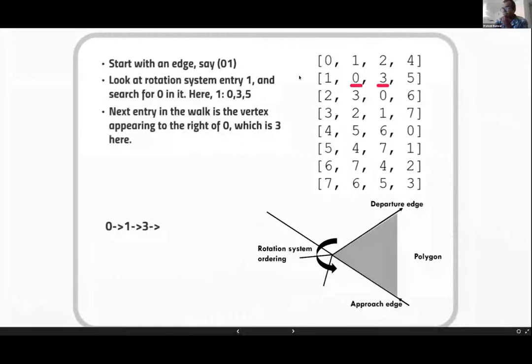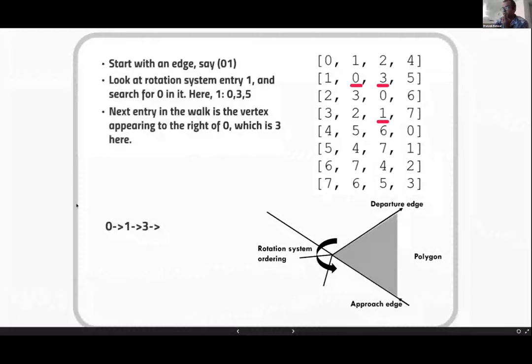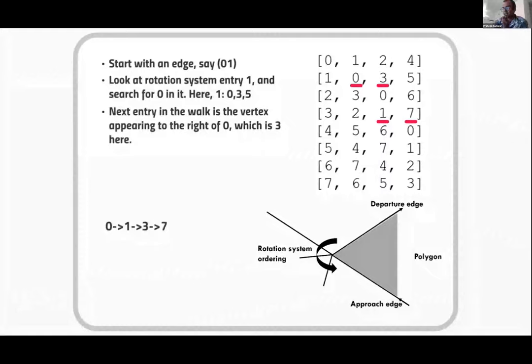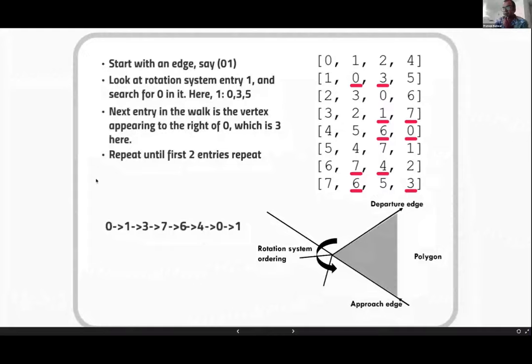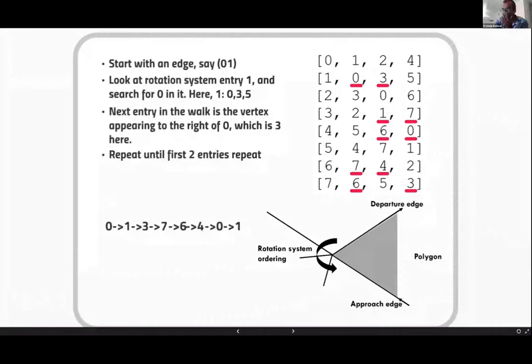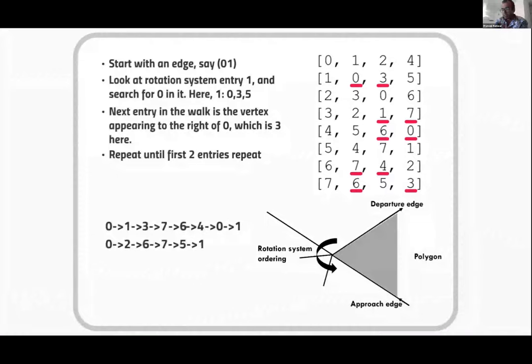Then I repeat this process. I look at the rotation system at three, and then I look at the entry, one is my approach edge, and my departure edge is going to be the next number. Repeat for seven, six, four. We repeat this until the first two entries repeat, because that means we've come back to where we started, giving us a polygon. In this case it's length six where it starts repeating. To find the remaining walks, we know for example the edge zero two is not appearing on this boundary walk, so we can start with zero two.